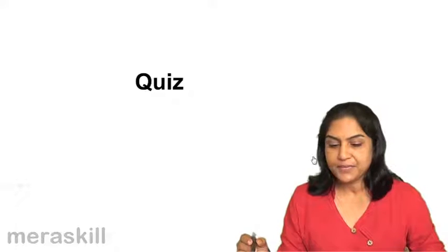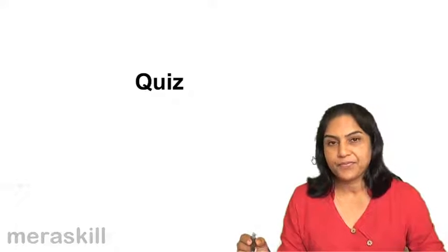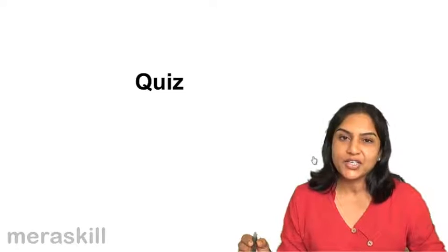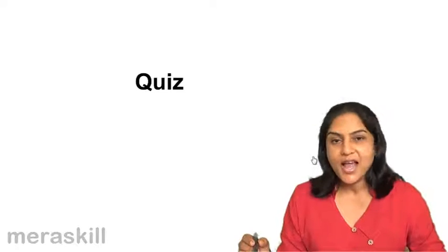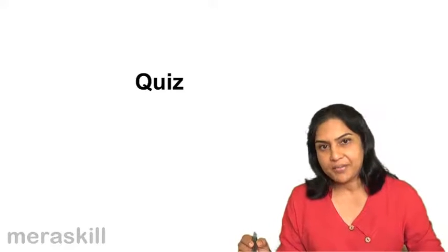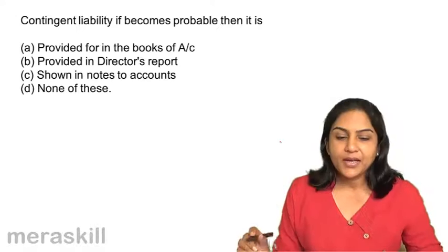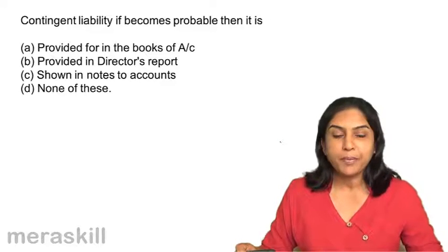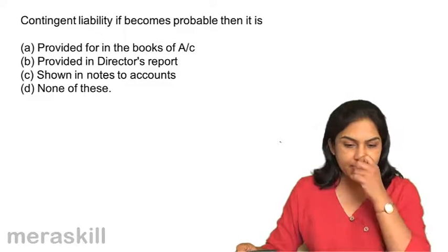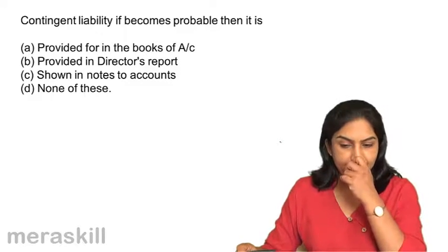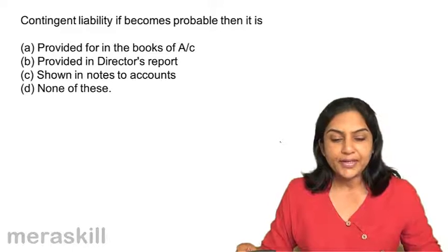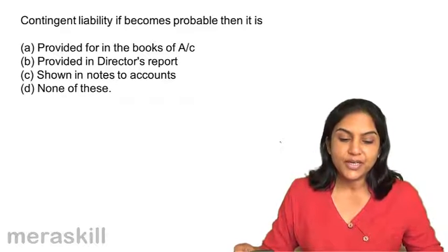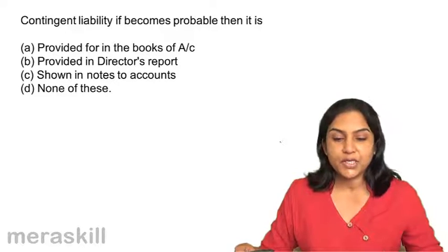A short quiz to test our understanding of contingent assets and liabilities. Contingent liability, if it becomes probable, then it is: A. provided for in the books, B. provided in the director's report, C. shown in the notes to accounts, and D. none of these.